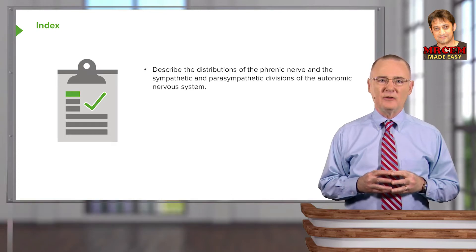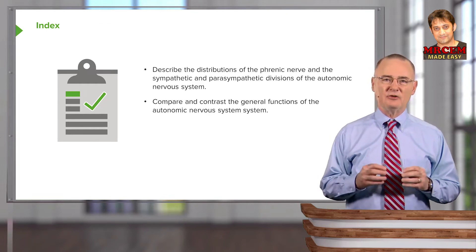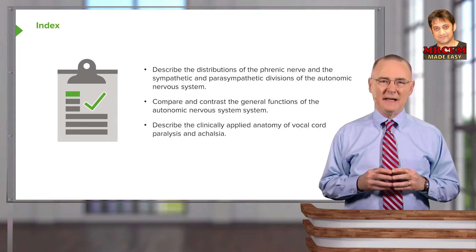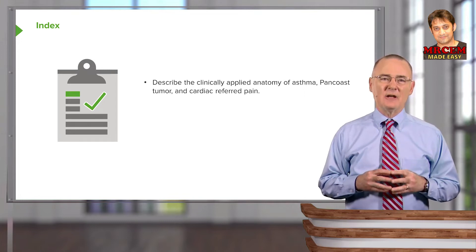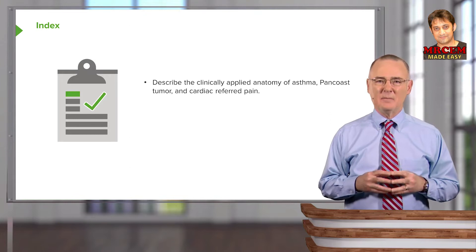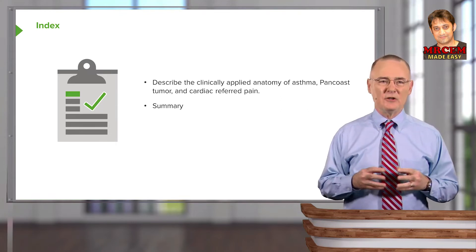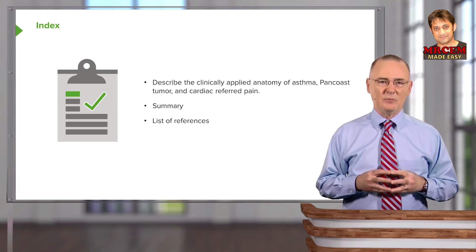First, describe the distributions of the phrenic nerve and the sympathetic and parasympathetic divisions of the autonomic nervous system, and compare and contrast their general functions. Describe the clinically applied anatomy of vocal cord paralysis, achalasia, asthma, pancoast tumor, and cardiac referred pain. We'll also summarize the key take-home messages and provide attribution for images used.